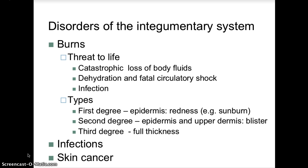First and second degree burns are sometimes referred to as partial thickness burns. Full thickness burns are third degree burns, which destroy the entire thickness of the skin. The surface wound is leathery and may be brown or black. Pain receptors, blood vessels, sweat glands, sebaceous glands, hair follicles — all accessory skin organs — are destroyed. Fourth degree burns involve tissues going all the way down to the bone, and unless a very limited area is affected, the patient would not survive.